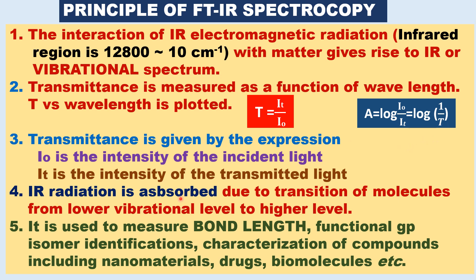IR radiation absorption occurs due to transition of molecules from a lower vibrational level to a higher vibrational level — that is, vibrational transitions. It is used to measure bond length, functional group identification, isomer distinction, and characterization of organic and inorganic compounds, including nanomaterials, drugs, and biomolecules.